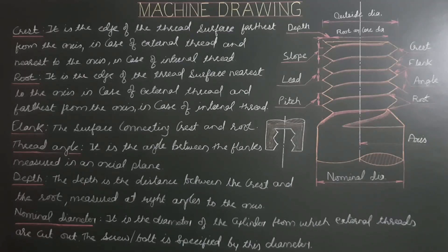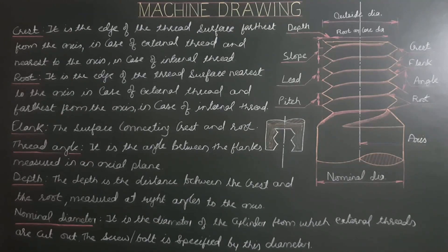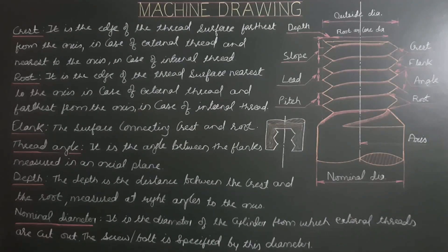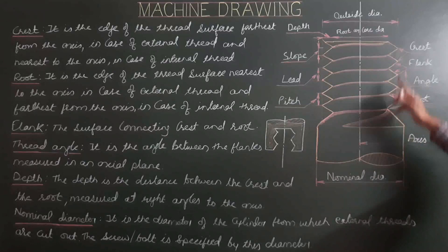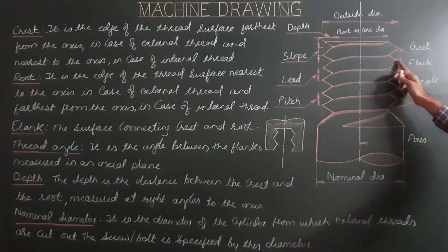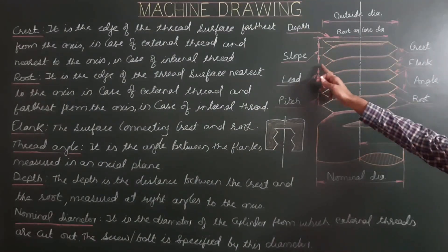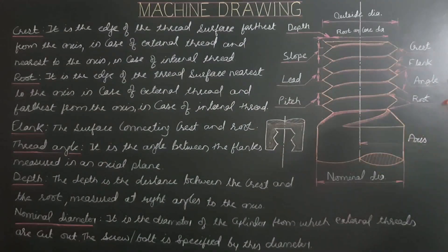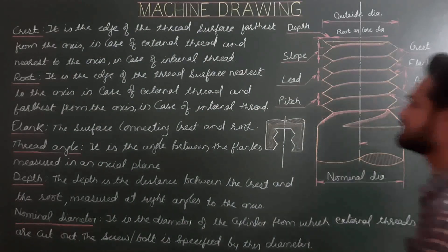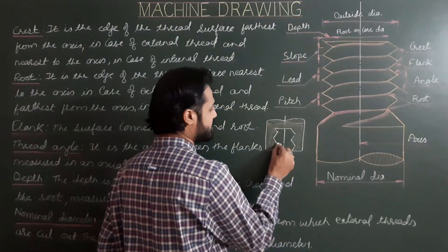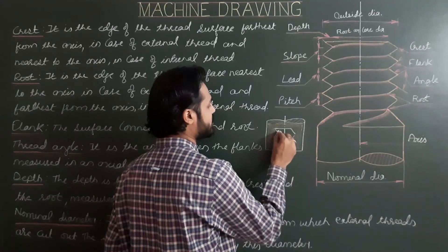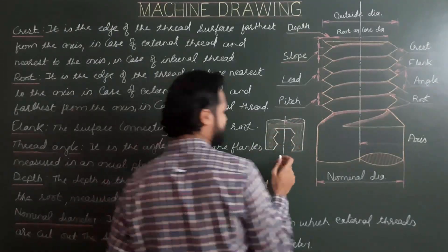Crest is the edge of the thread surface farthest from the axis in case of external thread, and nearest to the axis in case of internal thread. For external threads, the outermost points are the crest points; for internal threads, the points nearest to the axis are the crest points.